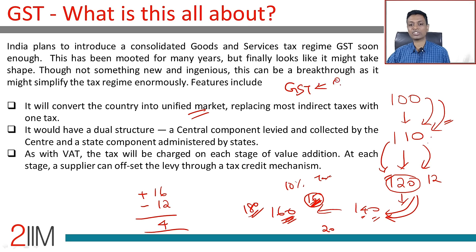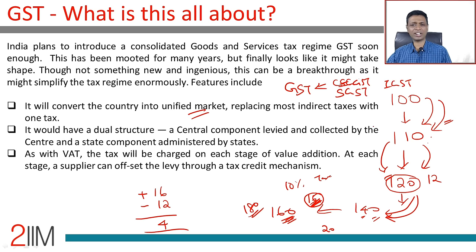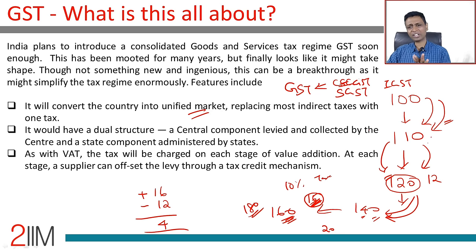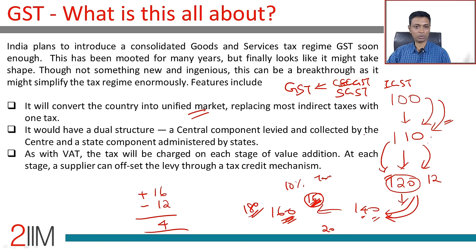Under GST there will be CGST, SGST, and IGST — Central, State, and Integrated GST. These cover transactions within a state, across two states, and within a state with subsequent sales. There are different systems of computing for each. I am giving only the broad overview here.